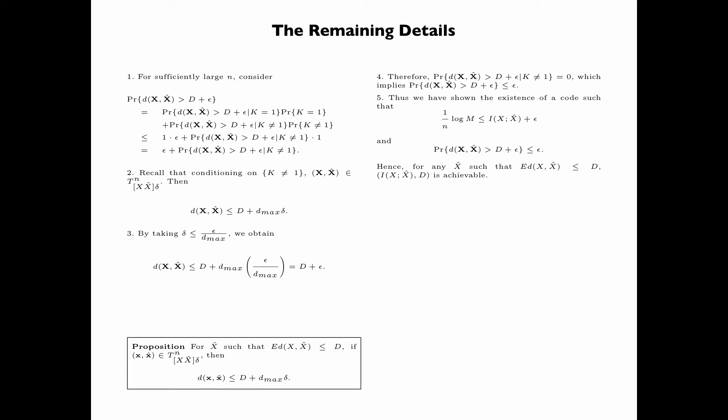Hence, for any x̂ such that the expected distortion between x and x̂ is less than or equal to d, the pair (I(x;x̂), d) is achievable. Finally, minimize I(x;x̂) over all such x̂ to conclude that the pair (r_I(d), d) is achievable. By the definition of the rate-distortion function r(d), this implies that r_I(d) is greater than or equal to r(d).